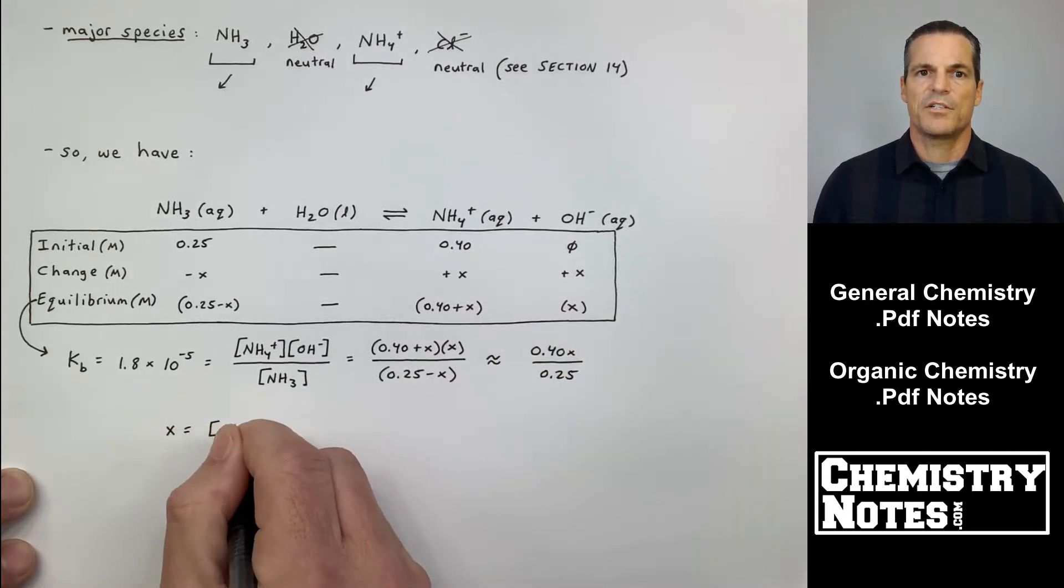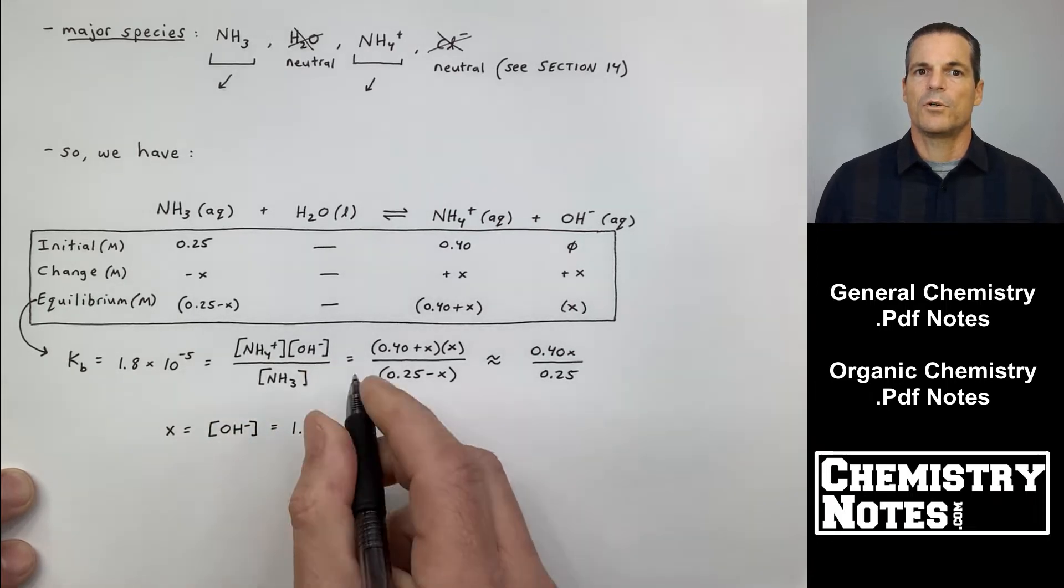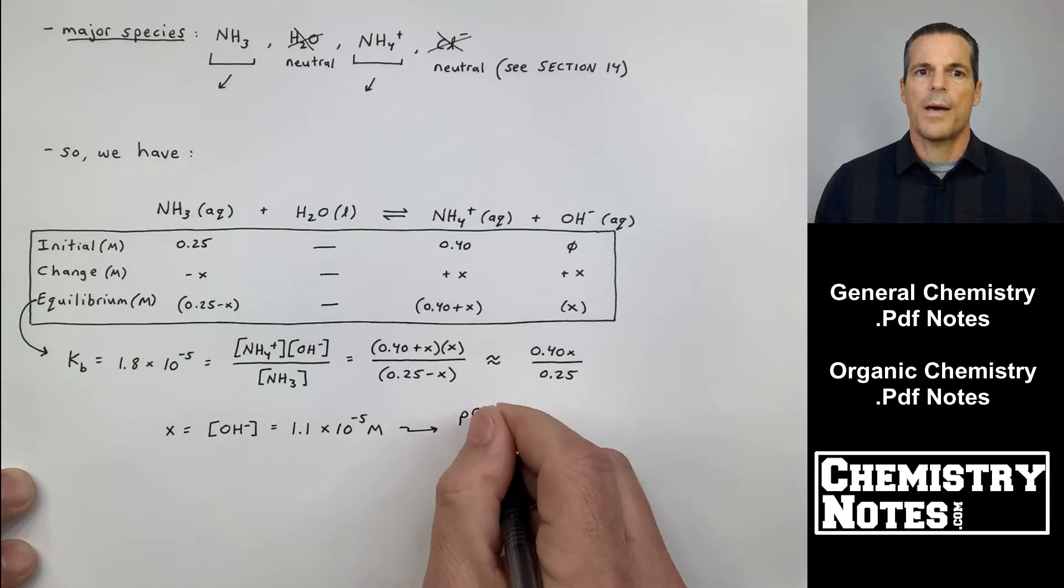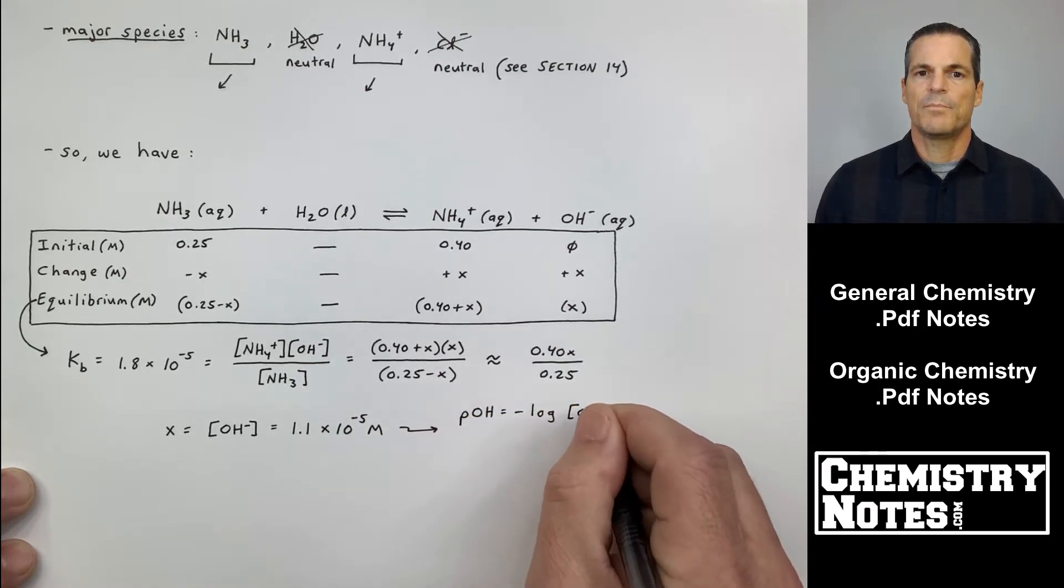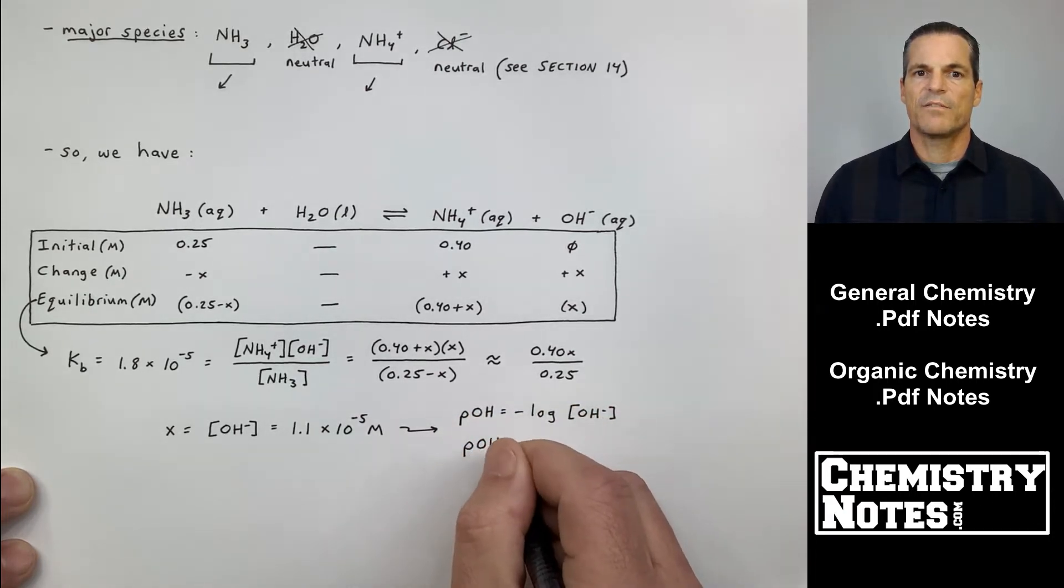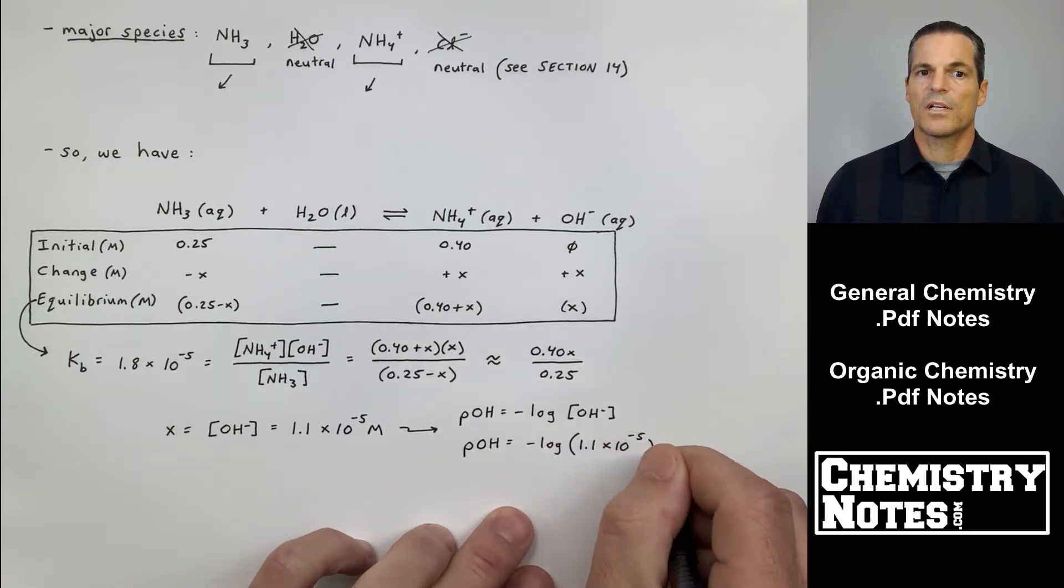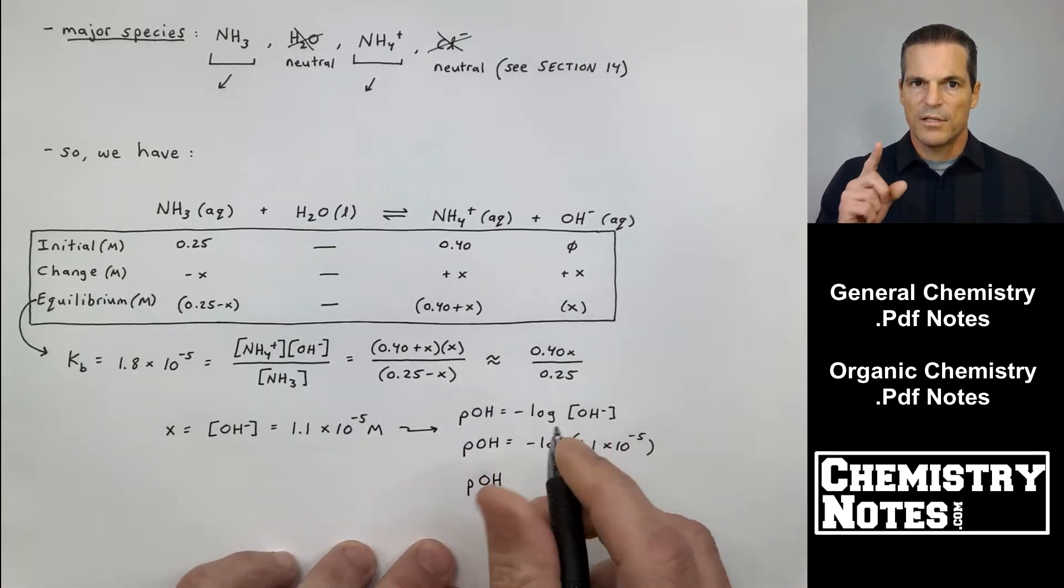We do our minus x's, plus x's, equilibrium. 0.25 minus x concentration of NH3. On the right-hand side, the concentration of NH4 plus, 0.40 plus x. Plug all that into your equilibrium expression, products over reactants. Simplify it to 0.40x divided by 0.25. You get x equal to the concentration of OH minus.